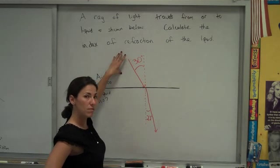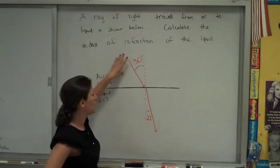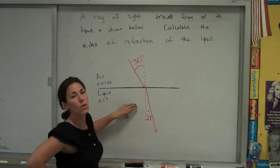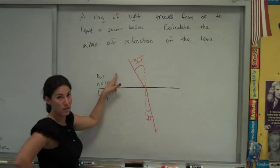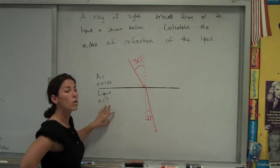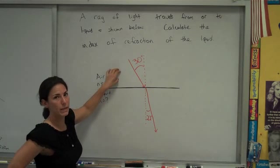So this must be the faster medium, and this must be the slower medium, because it's bending toward the normal. So you can expect that this n value is going to be bigger than this n value. We're going to have a slower medium here, and a faster medium for the light here.